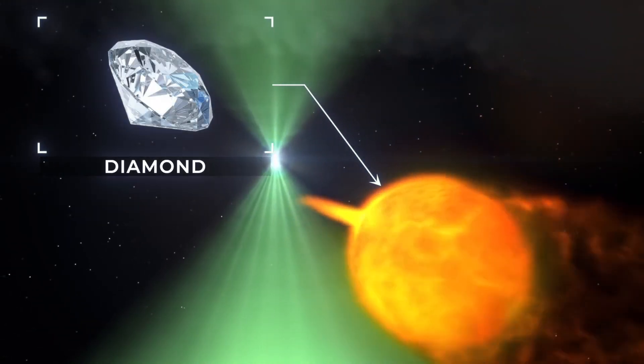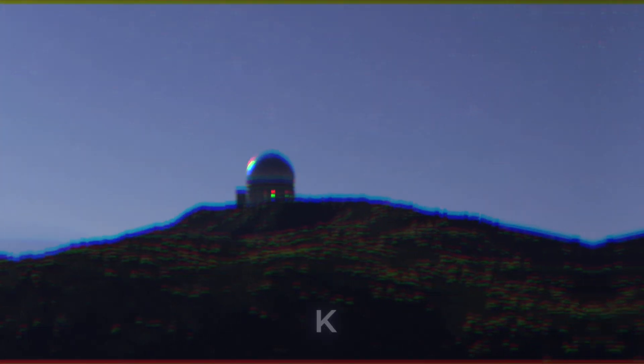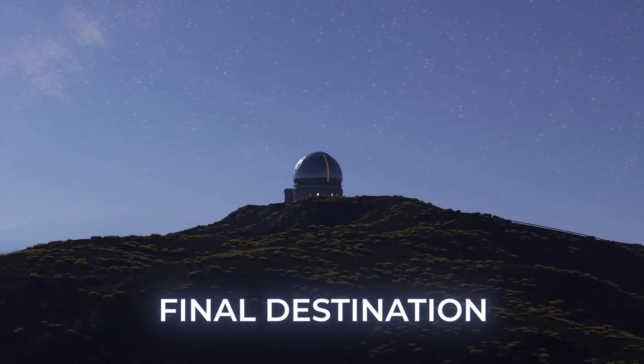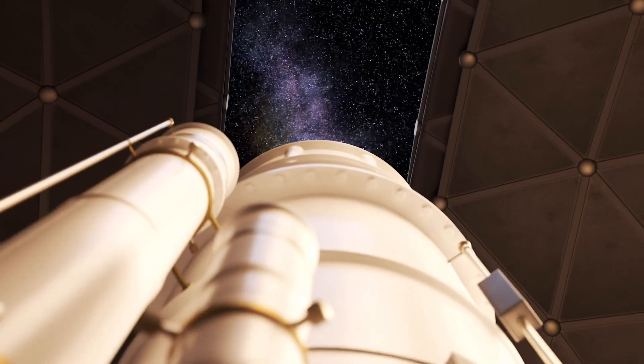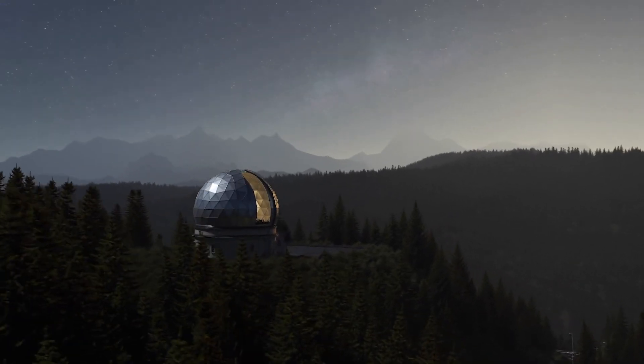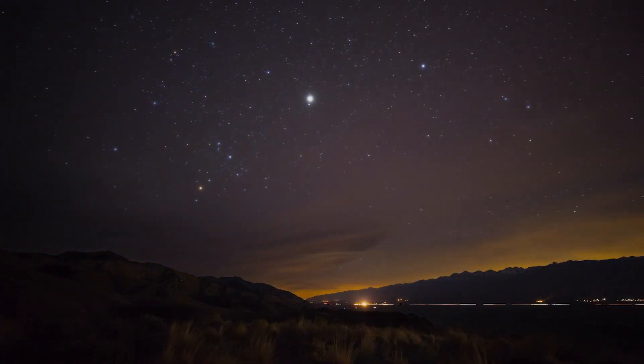For this reason, this pulsar planet is sometimes given the nickname of the Diamond Planet. The final destination of our voyage is so far distant that we must leave our home galaxy entirely. In October this year, astronomers were able to confirm the existence of this first extragalactic planet.